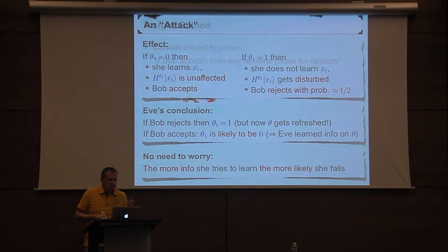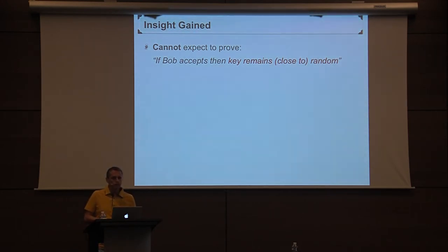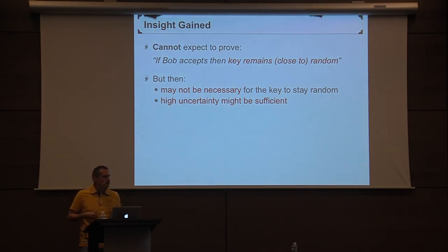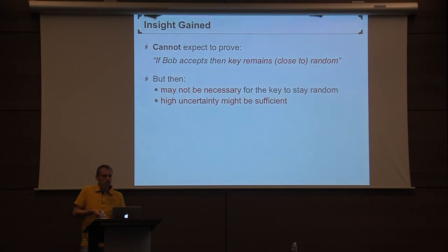Why did I discuss this attack? It shows nicely what we can or cannot expect to prove formally. It shows that it's not possible to prove a statement of the form: if Bob accepts, then the key remains close to uniformly random — this attack contradicts that. The insight is that it may not be necessary for the key to be uniformly random; it might be good enough to have high enough uncertainty. That's what we show. This also explains why previous approaches failed: they tried to prove exactly that statement, but if you have a scheme that works qubit-wise, this kind of attack always contradicts it.